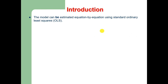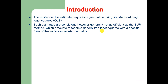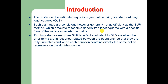The model can be estimated equation by equation using standard ordinary least squares. Such estimates are consistent, however generally not as efficient as the seemingly unrelated regression method, which amounts to feasible generalized least squares with a specific form of variance-covariance matrix. Two important cases when SUR is equivalent to OLS: when the error terms are uncorrelated between the equations, and when each equation contains exactly the same set of regressors on the right-hand side.